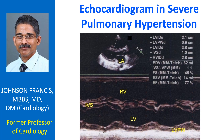The M-mode measurements displayed include: IVS (interventricular septum), LV (left ventricle), LVPW (left ventricular posterior wall), LA (left atrium), LVIDS (left ventricular internal diameter systolic), LVPWD (left ventricular posterior wall diastolic), LVIDD (left ventricular internal diameter diastolic), and IVSD (interventricular septum diastolic).